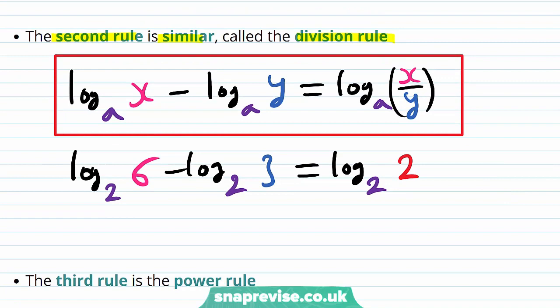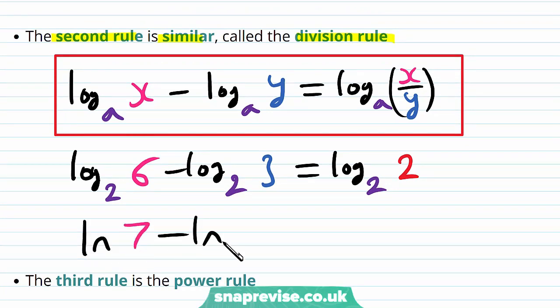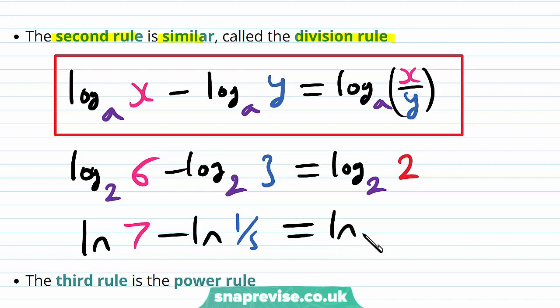Similarly, if we had the natural logarithm of 7 minus the natural logarithm of 1 fifth, this would be the natural logarithm of 7 over 1 fifth, which is 7 times 5, so we get the natural logarithm of 35.